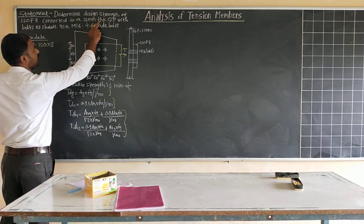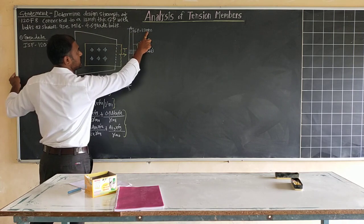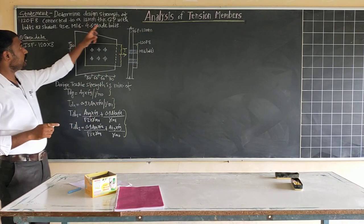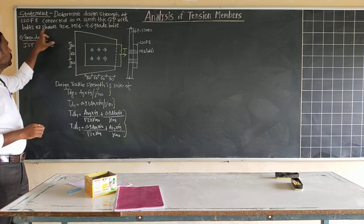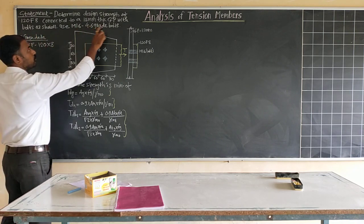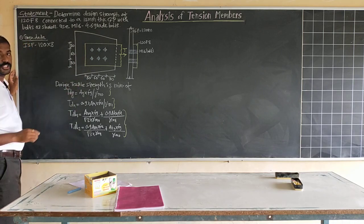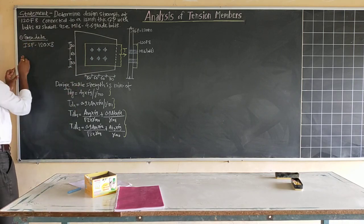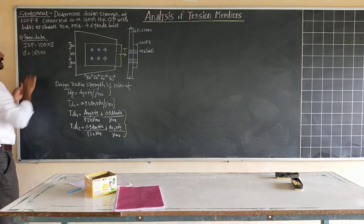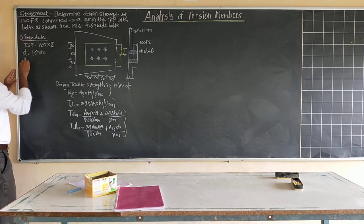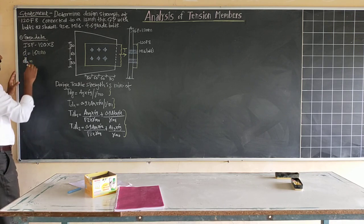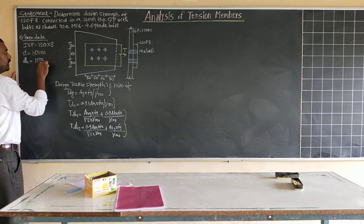The flat is connected to a 12 mm thick gusset plate. The bolt details given are M16 4.6 grade, so the diameter of bolt is 16 mm. The diameter of the hole is 16 plus 2 mm clearance, giving a hole diameter of 18 mm.